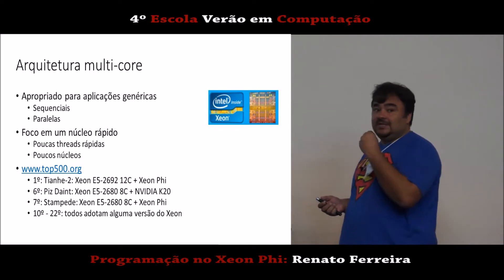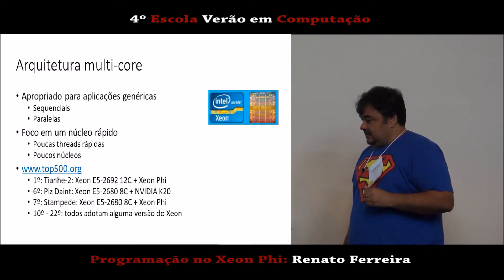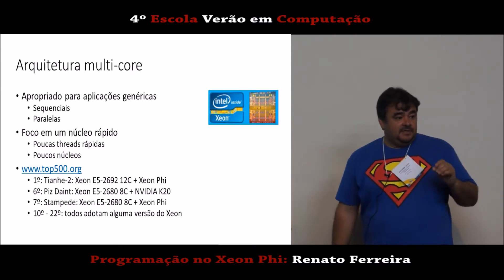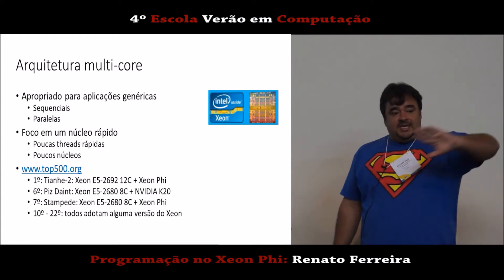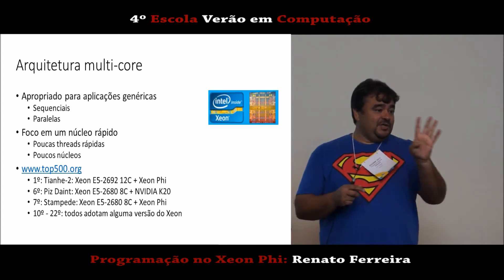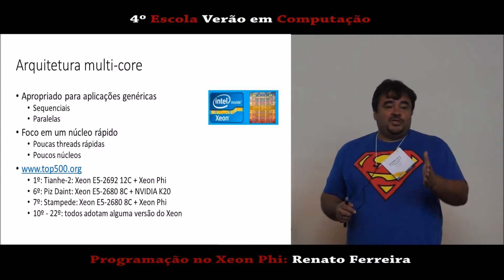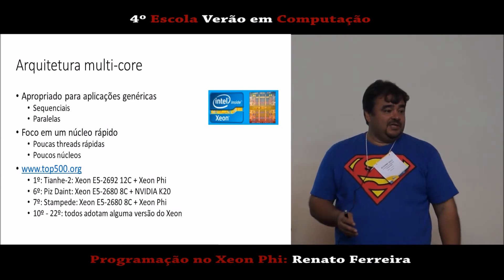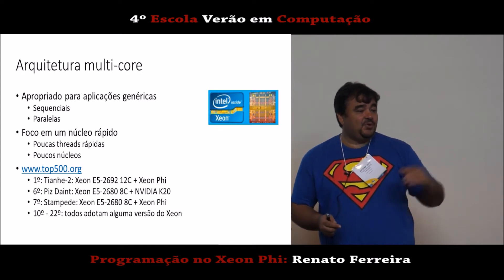Eles tentaram fazer isso com a arquitetura Itanium da Intel. Foi uma tentativa de esquecer o legado — a história da Intel começou lá no 4004, um processador para uma calculadorinha de quatro bits. Eles mantêm o mesmo conjunto de instruções desde o 4004 até o i7 top de linha: tipos de dado BCD e etc., por causa de legado. E isso complica a arquitetura — as instruções são longas, complexas, a codificação da instrução é bizarra.